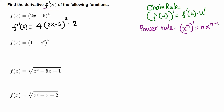We can simplify further: 2 times 4 gives 8, so the final answer is 8(2x - 5)³. Similarly for the next problem, we have (1 - x²)⁷. Here, (1 - x²) is the inner function, and 'raised to 7' — like x raised to 7 — is the outer function.